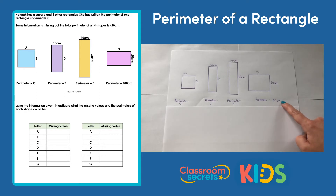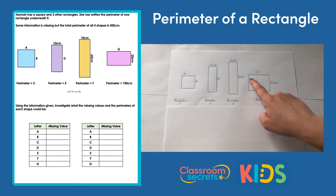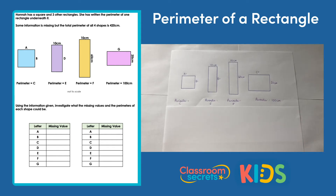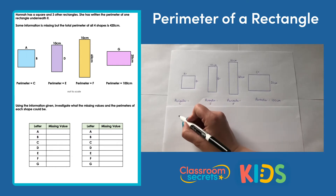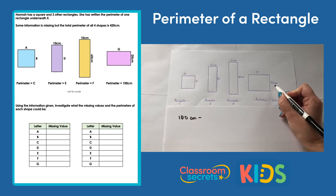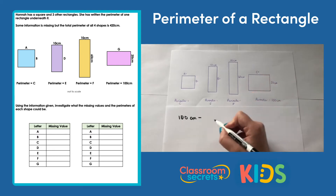The perimeter of this shape has already been written down — the perimeter is 100cm. We're going to think about what we know about the perimeter of a rectangle. We know that opposite sides are equal. We can use this: starting with 100cm, we can subtract the 20cm from this side and the 20cm from the opposite side.